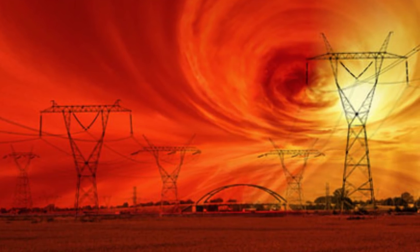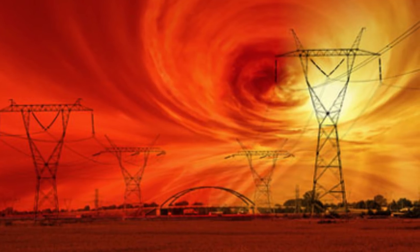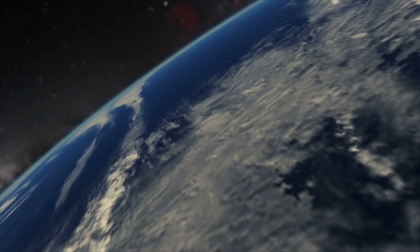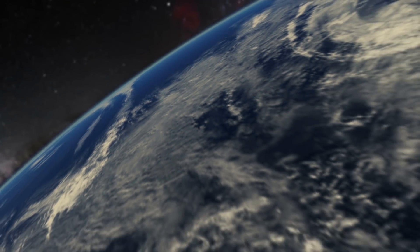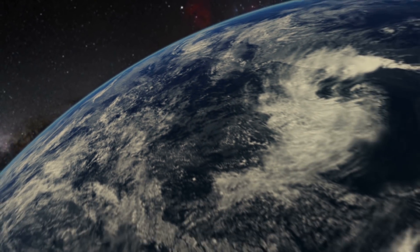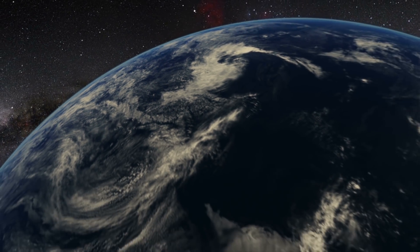Another extreme solar storm erupted from the sun in 2012, but thankfully, the earth was not facing that part of the sun. If it was even 10 days earlier in the year, the earth would have felt the effects. Power structures would have been knocked out for years, possibly even decades.